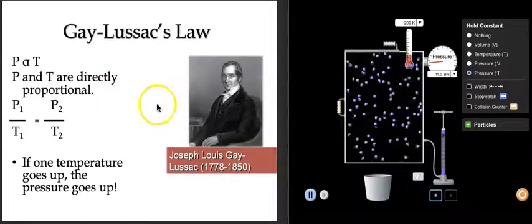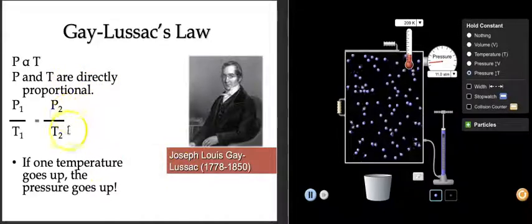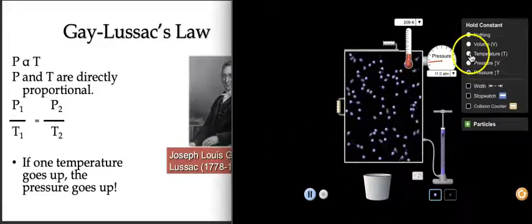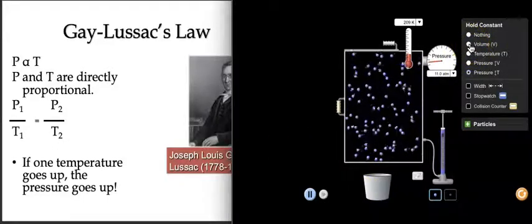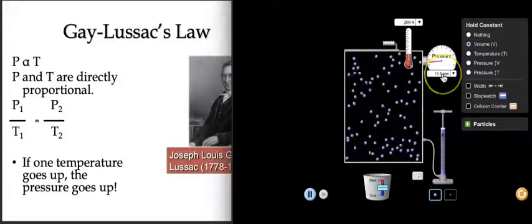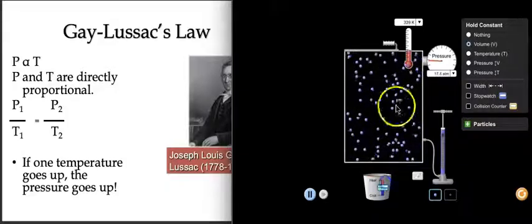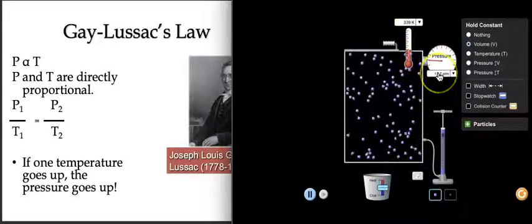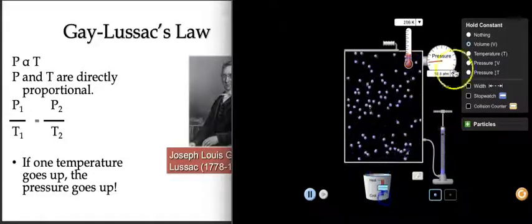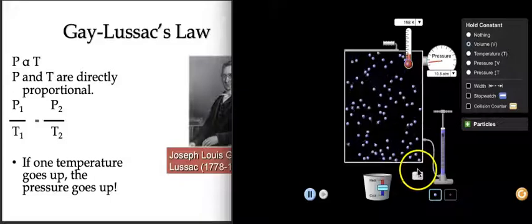Another dapper fellow, Joseph Gay-Lussac, worked with pressure and temperature. If we hold volume constant and heat things up, we should get a whole bunch more collisions with the inside of the container. You can see the temperature going up and the pressure going up, and the opposite is also true — if you drop the temperature, the pressure also drops. That's a pretty easy one to think about.